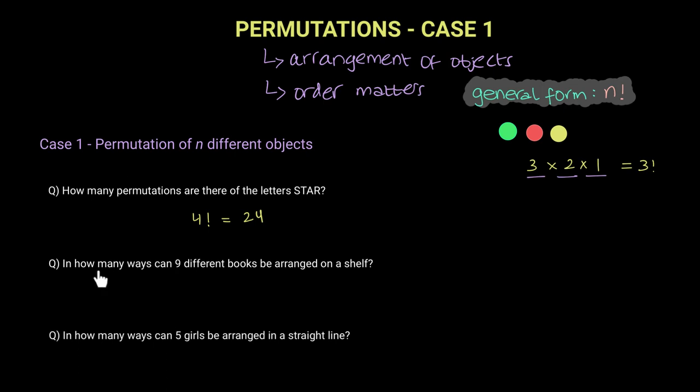And now in the next question, it says, in how many ways can nine different books be arranged on a shelf? Well, once again, there are nine different books and nine positions for us to arrange the books. So all we need to do is nine factorial, which is 362,880.